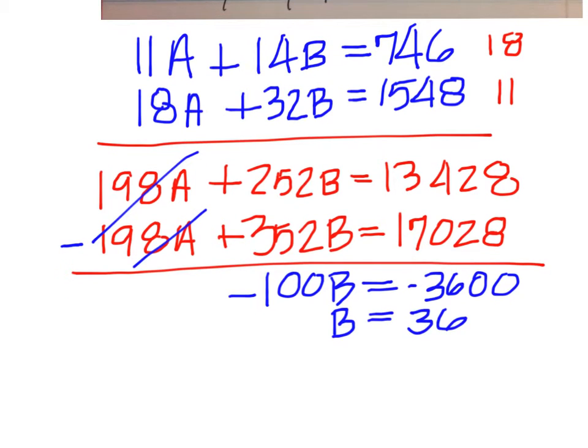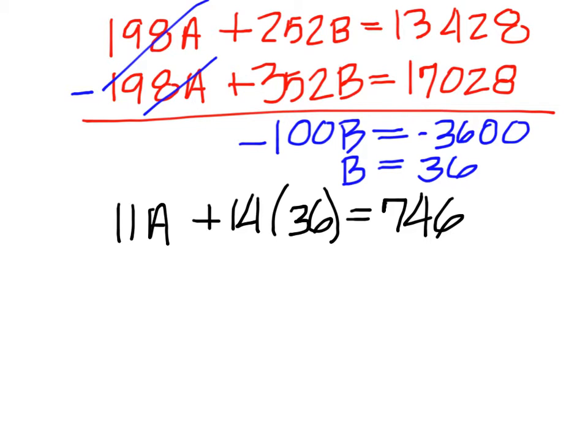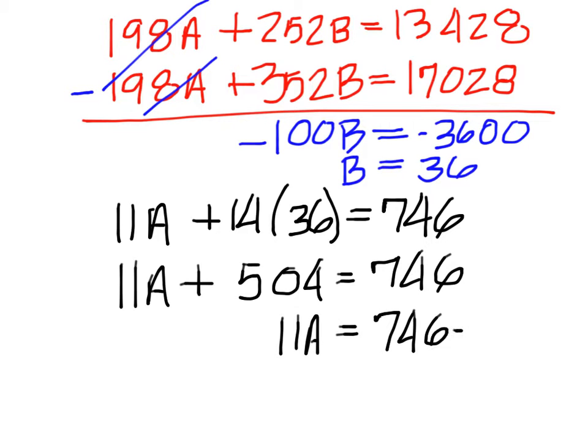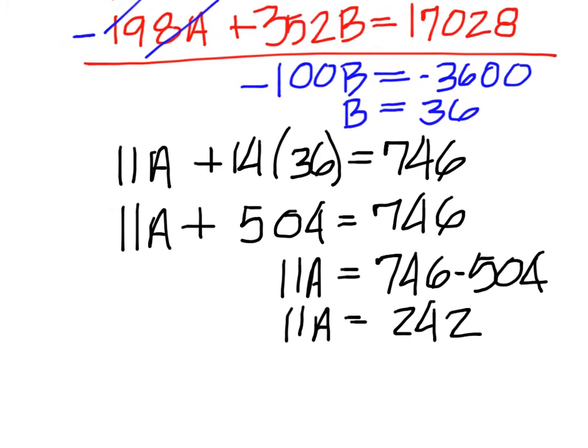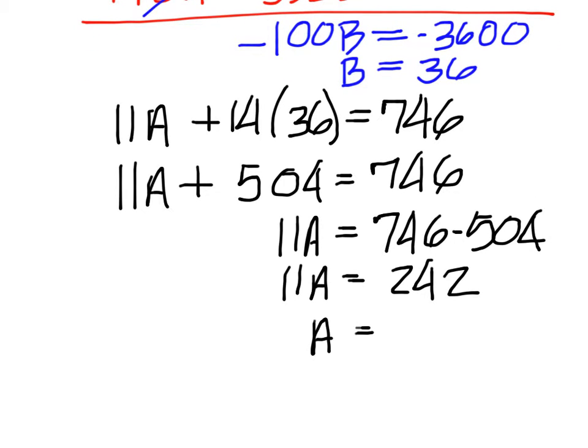We can go back and plug that back into the top equation. 11A plus 14 times 36 equals 746. So we're going to have 11A plus 504 equals 746. So 11A will equal 242. 242 divided by 11 is 22. So we know that the 16GB was $22 and the 32GB was $36.